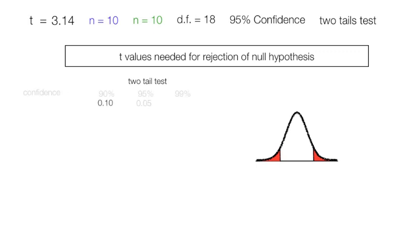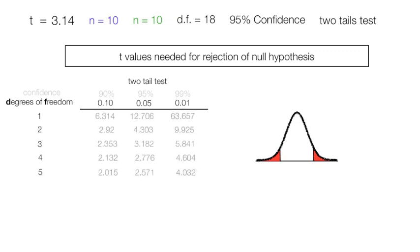Across the top of the t-table you have confidence levels — sometimes written as 0.1, 0.05, 0.01. Down the side you have degrees of freedom: 1, 2, 3, 4, 5, and so on. We need degrees of freedom of 18 and 95% confidence, so the critical values are 2.1 and negative 2.1.